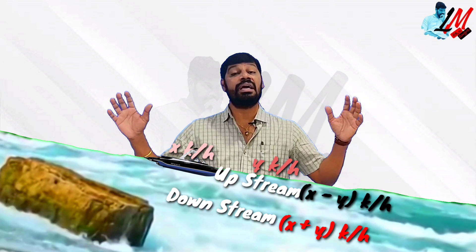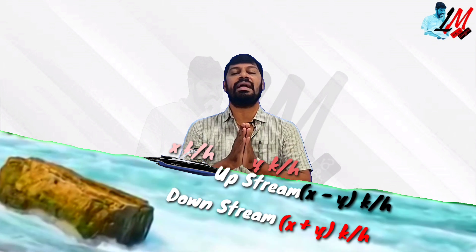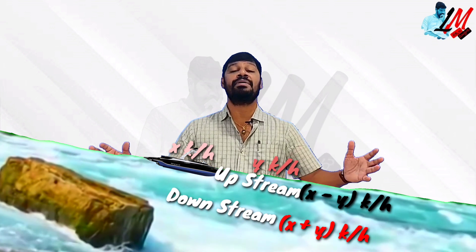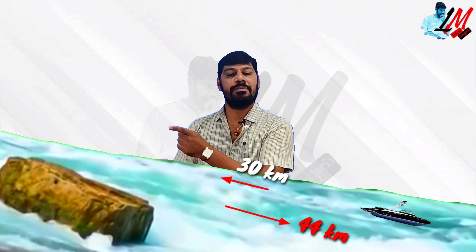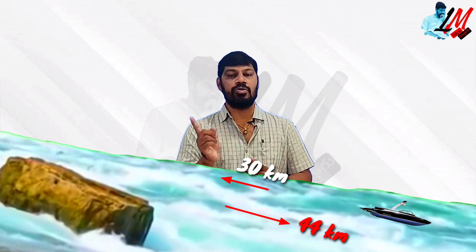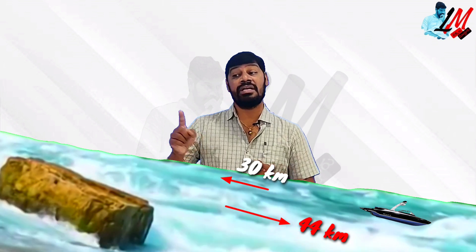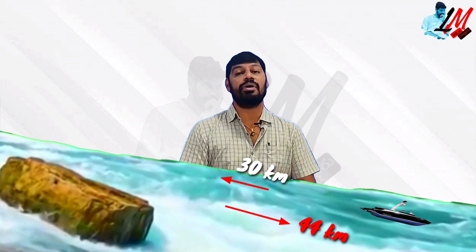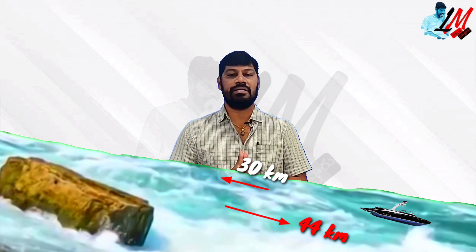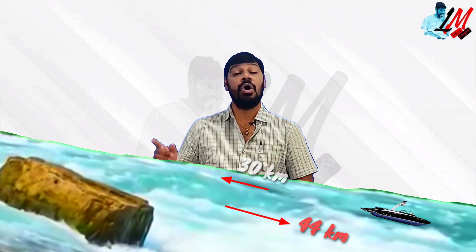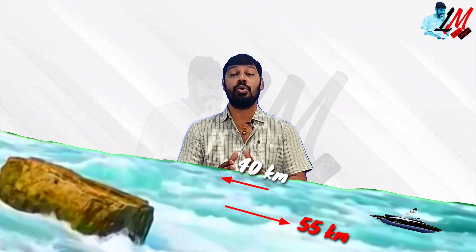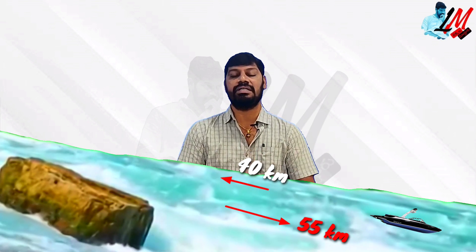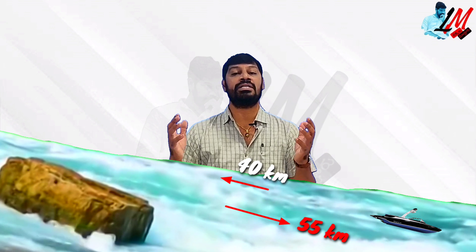Now let us discuss the first word problem. One boat goes 30 km upstream and 44 km downstream — this entire journey takes 10 hours. In another situation, it goes 40 km upstream and 55 km downstream in a total of 30 hours. What is the speed of the boat and what is the speed of the water?